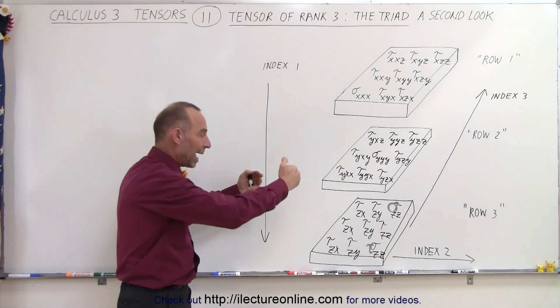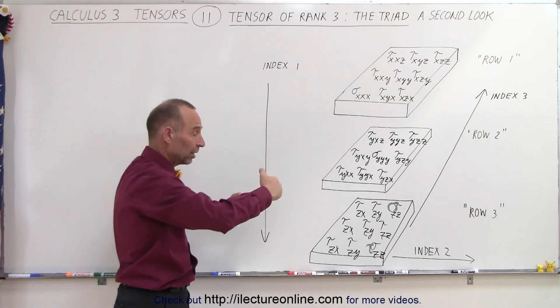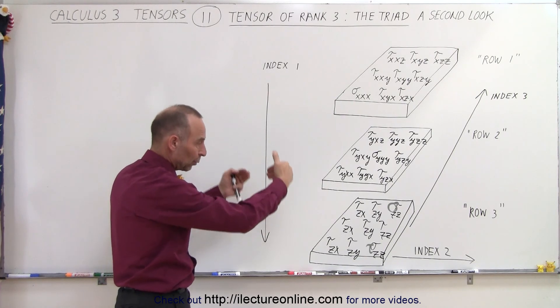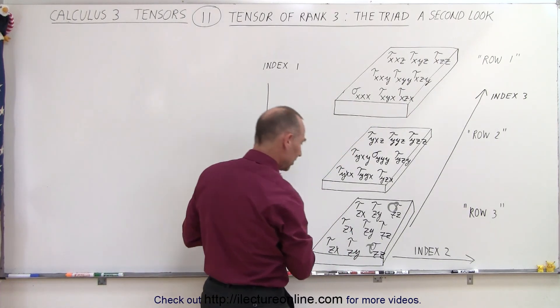And then finally, we go from front to back, the first page, the second page, the third page, that's the third index. So the first on the front, all of them get x's, then they all get y's, then they all get z's.